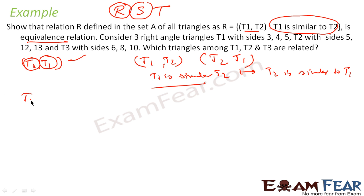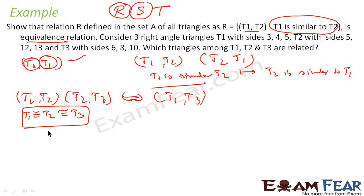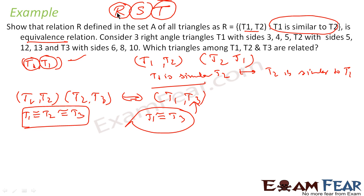For transitive, if (T1, T2) is a member of this relation and (T2, T3) is a member of this relation, this should imply that (T1, T3) is a member. T1 is similar to T2 and T2 is similar to T3, which means T1 is similar to T3, so (T1, T3) is part of this set. Since they are reflexive, symmetric, and transitive, it is an equivalence relation.